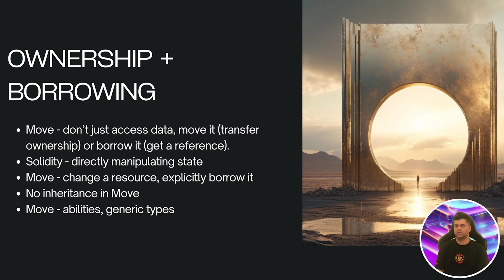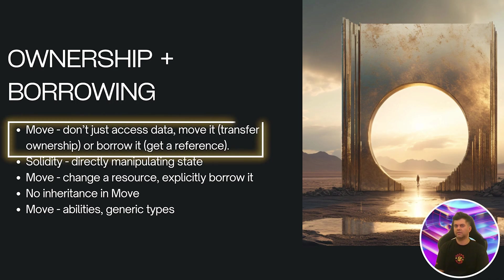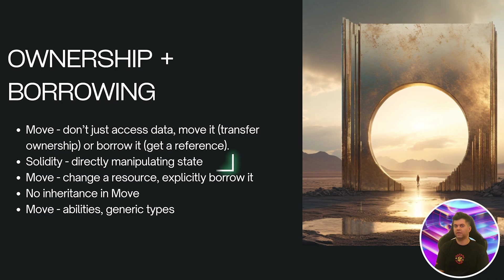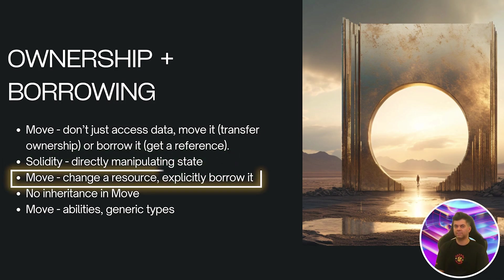Now let's talk about ownership and borrowing. If you've used Rust this might feel familiar. In Move you don't just access data — you either move it or borrow it. This is different from Solidity where you're often directly manipulating state. In Move, if you want to change a resource you need to explicitly borrow it mutably. This helps prevent a whole class of concurrency bugs.